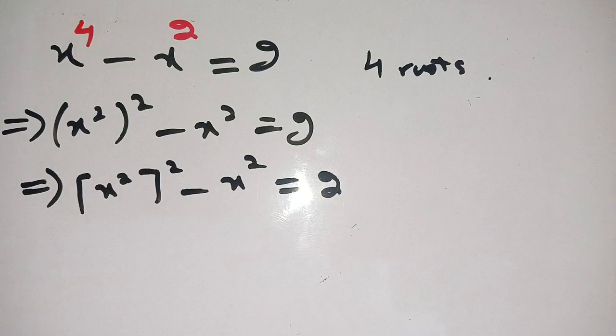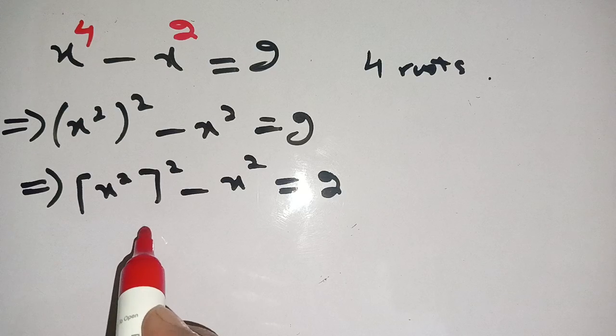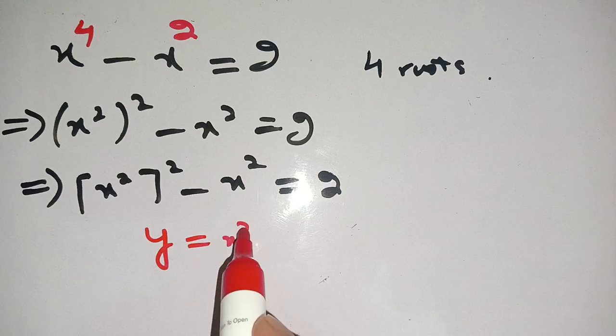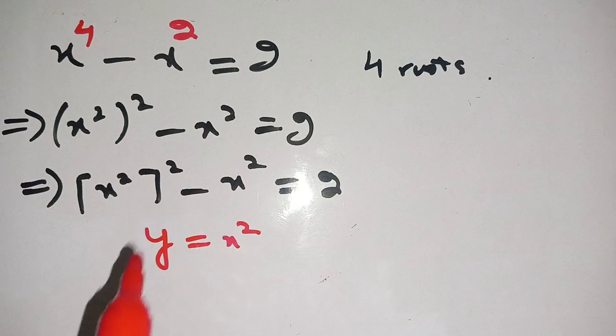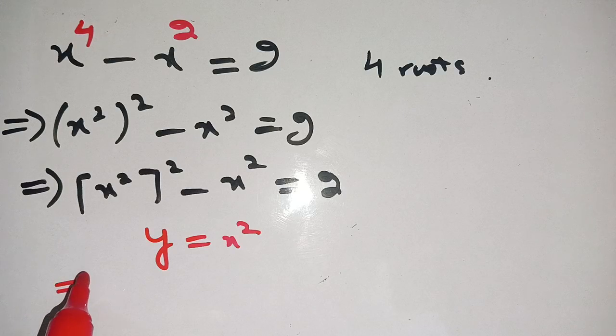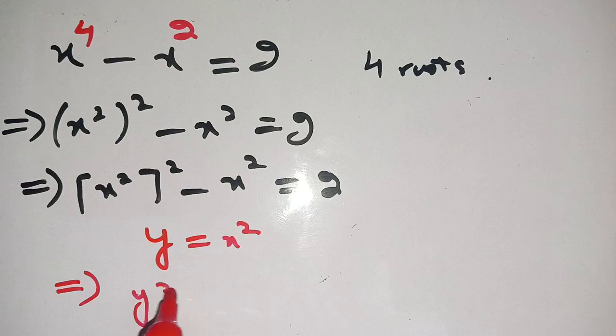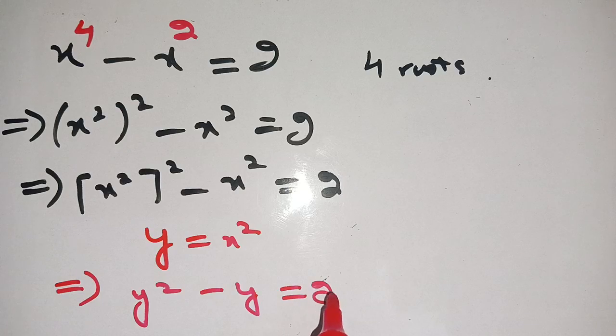For more simplification, in place of x square, let us suppose that y is equal to x square. Now, replacing x square by y, we get y square minus y is equal to 2.